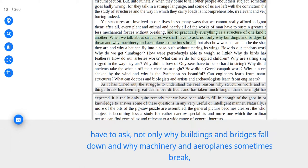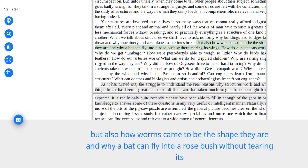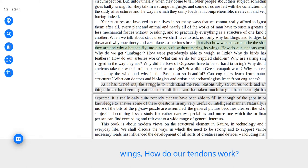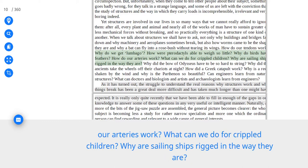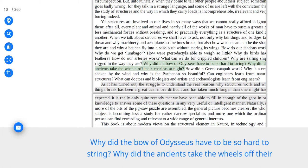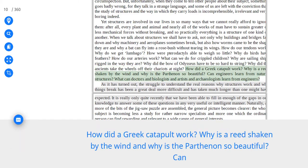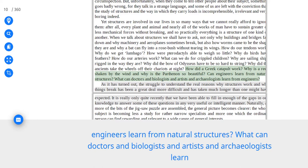When we talk about structures we shall have to ask, not only why buildings and bridges fall down and why machinery and airplanes sometimes break, but also how worms came to be the shape they are and why a bat can fly into a rose bush without tearing its wings. How do our tendons work? Why do we get lumbago? How were pterodactyls able to weigh so little? Why do birds have feathers? How do our arteries work? What can we do for crippled children? Why are sailing ships rigged in the way they are? Why did the bow of Odysseus have to be so hard to string? Why did the ancients take the wheels off their chariots at night? How did a Greek catapult work? Why is a reed shaken by the wind and why is the Parthenon so beautiful?